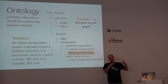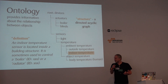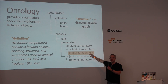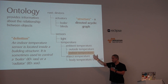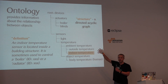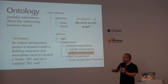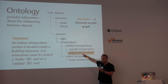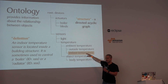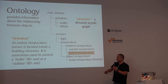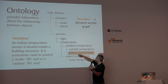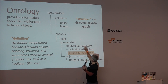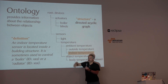Ontologies define the relationships between objects. So let's say we take our DHT11, and it might be annotated with 'indoor temperature sensor.' There might be a definition: an indoor temperature sensor is located inside building structures. It's sometimes used to control a boiler — another reference to the ontology — or a radiator. Here I don't really define anything else but just that it's sitting inside. The entire definition of what temperature sensing means is up there, and 'indoor temperature sensor' branches off from ambient temperature sensors, which branch off from temperature sensors, which are part of sensors. That's the structure of the ontology.